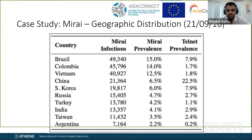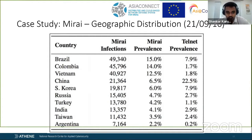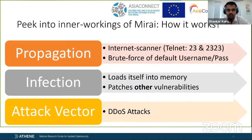Looking at the geographic distribution of Mirai on September 21, 2016, infections were highest in Brazil, Colombia, and Vietnam, sorted by number of infections.